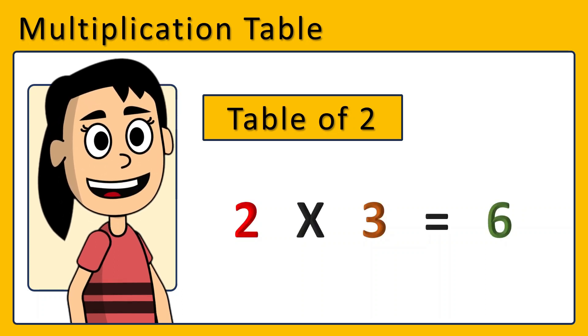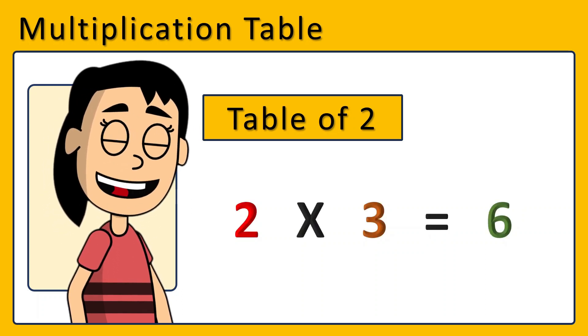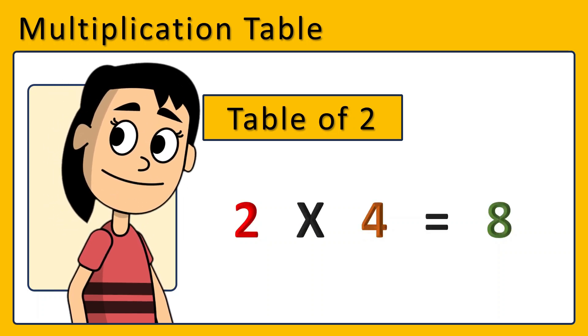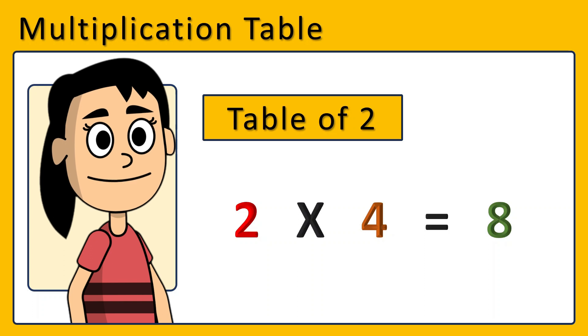2 times 3 are 6. 2 times 3 are 6. 2 times 4 are 8. 2 times 4 are 8.